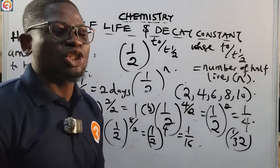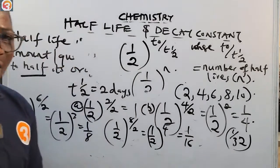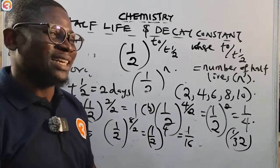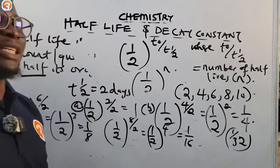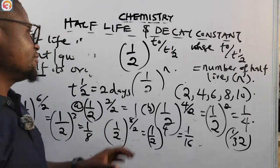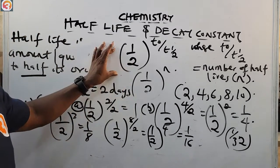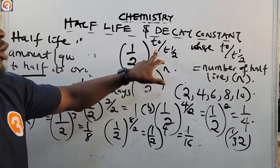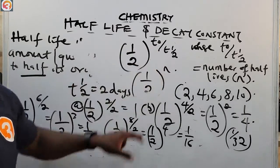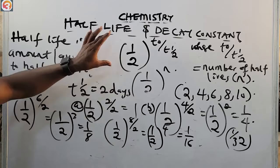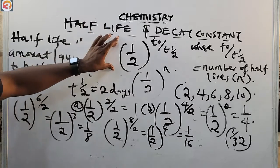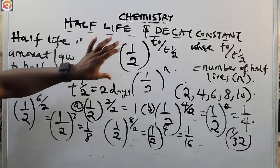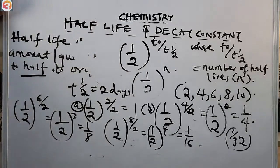That is how to calculate the fraction left of a radioactive material after a particular time. The formula is (1/2) raised to the power of t-naught over t-half. You should commit this formula to memory.